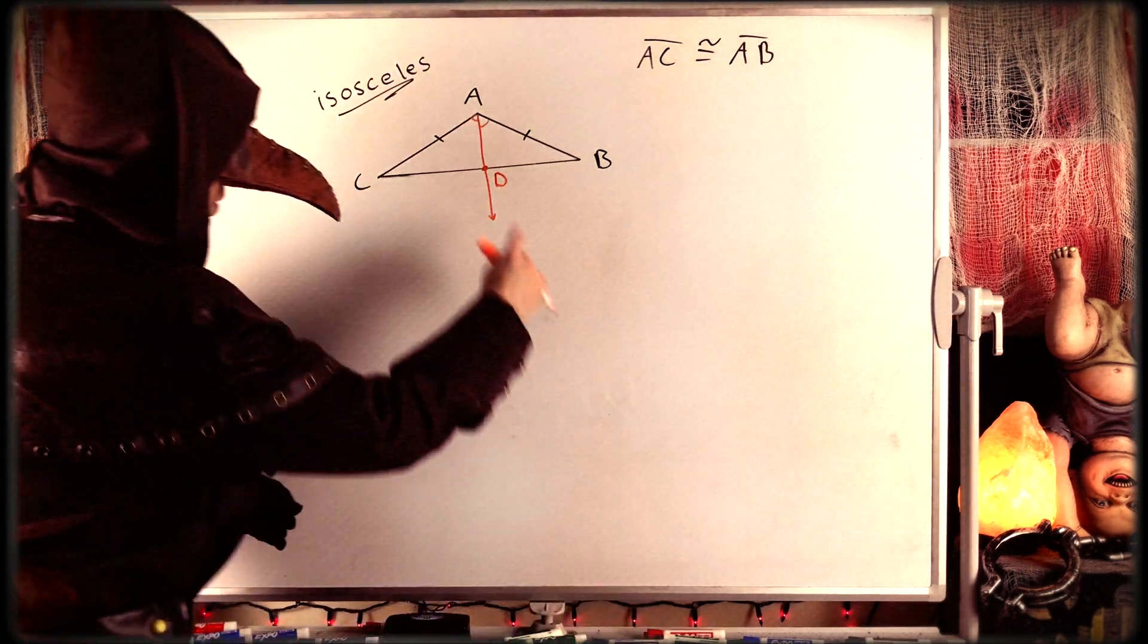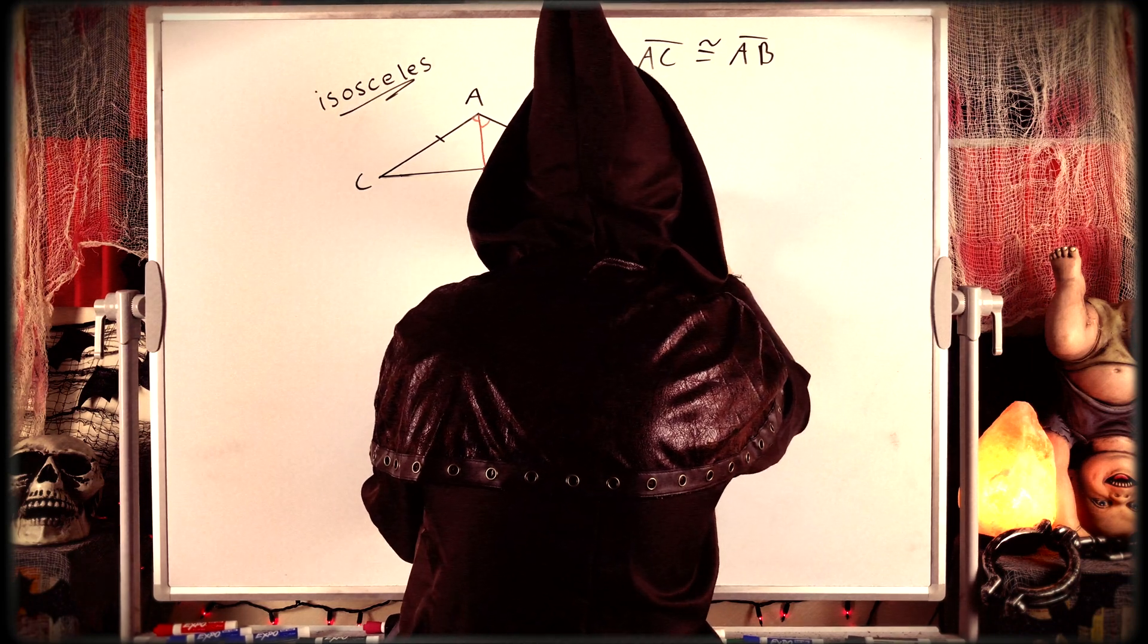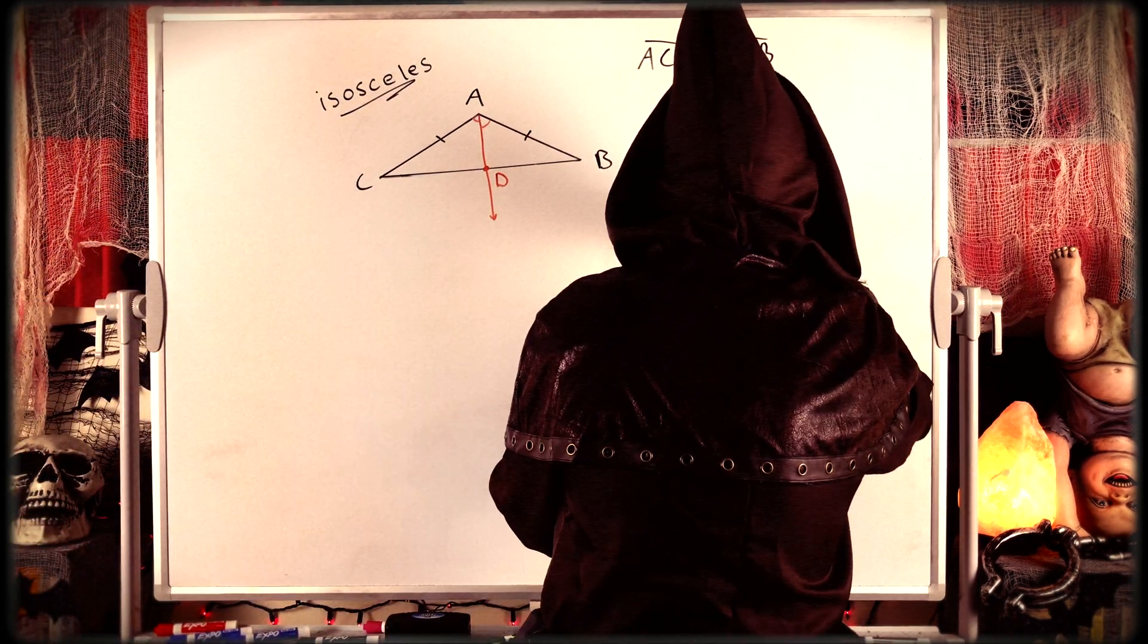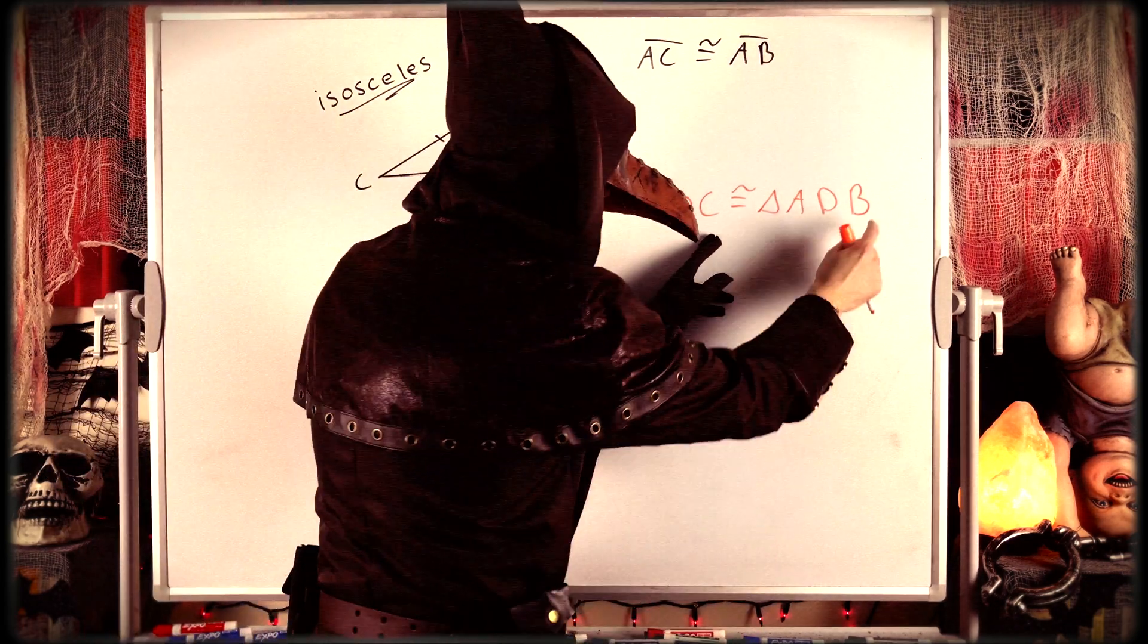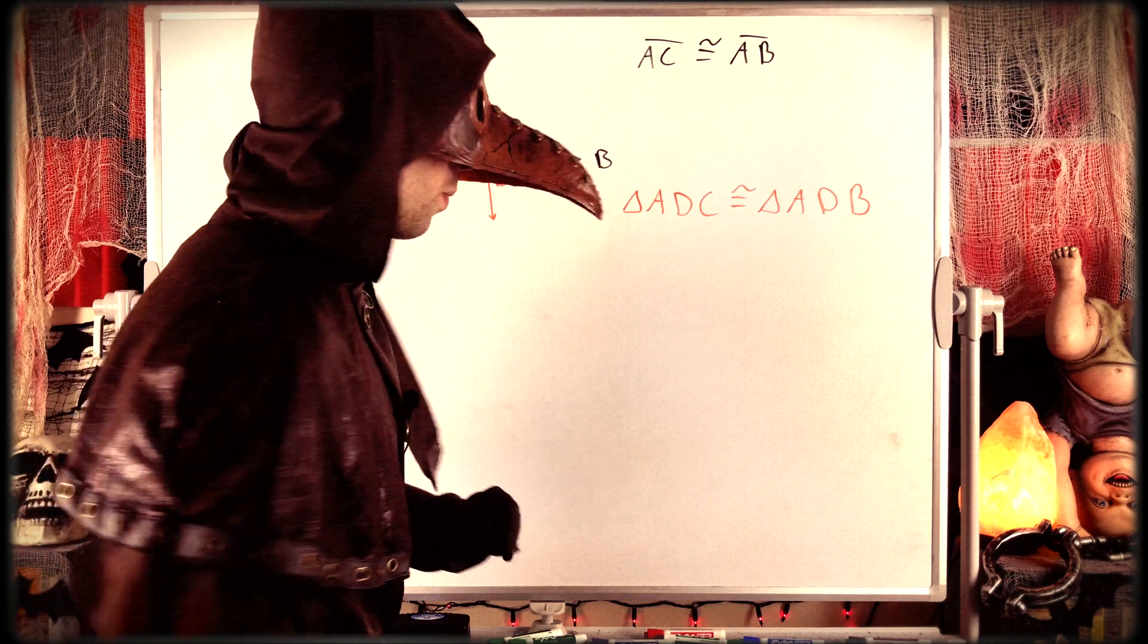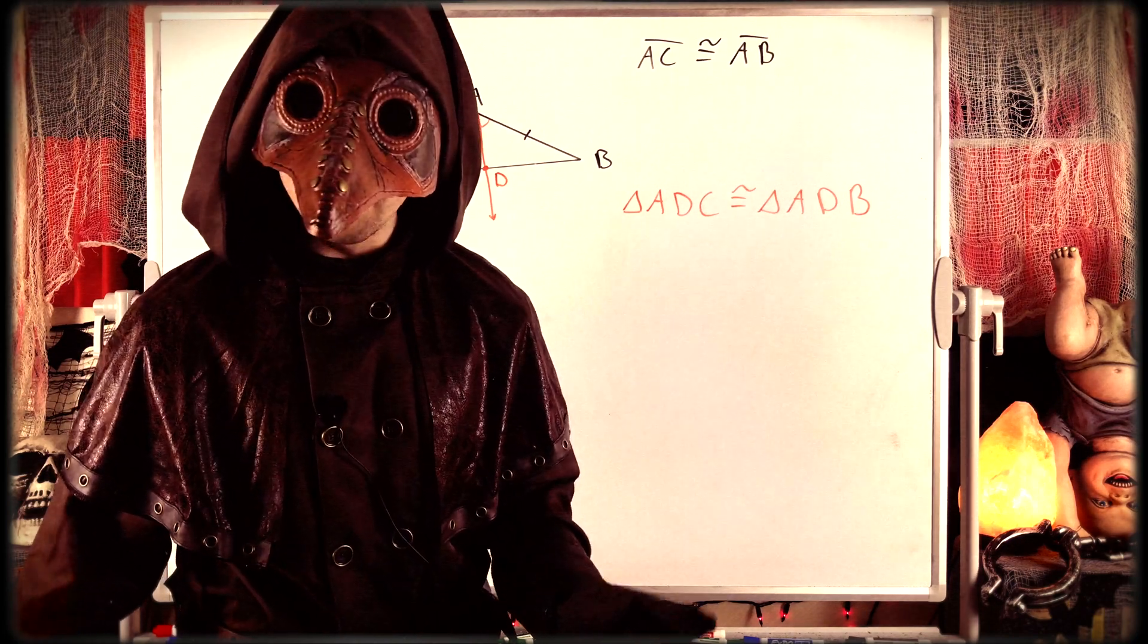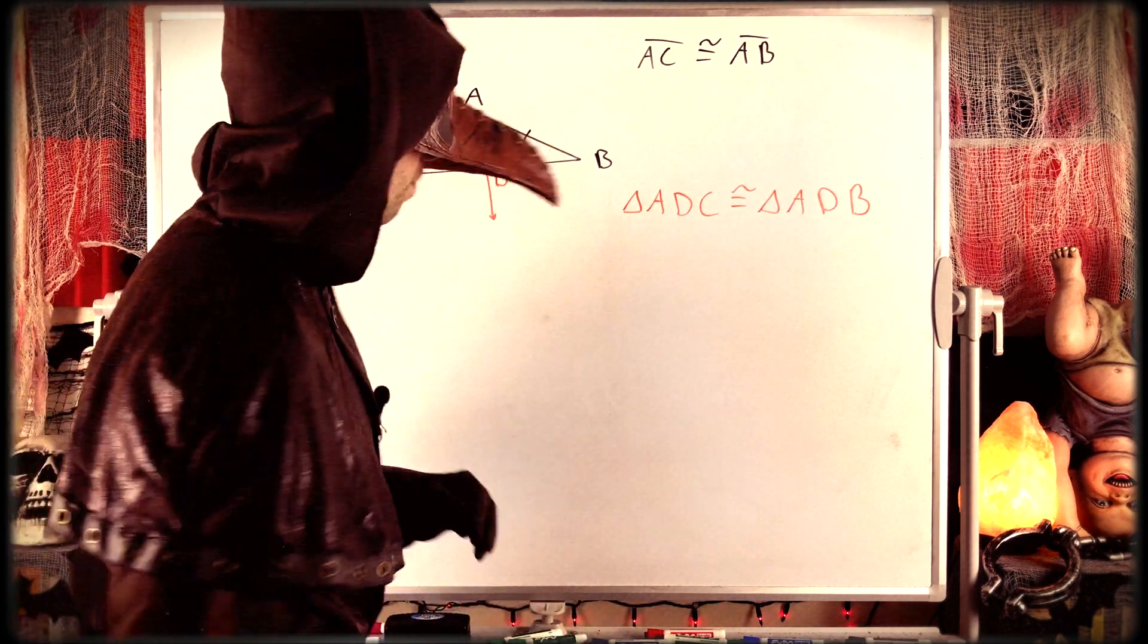So now we've got these two triangles, triangle ADC, and we want to show that it's congruent to triangle ADB. And if we can do that, we will have proven that their corresponding angles, C and B, are also congruent just as we want. So are these two triangles congruent? How can we conclude that they are? Turns out it's very easy. It's just a result of the side angle side triangle congruence postulate.